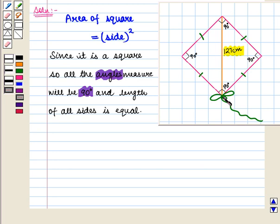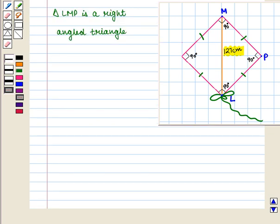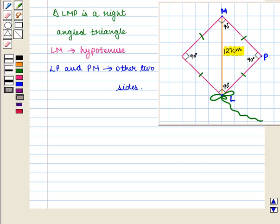Now, let us label this end be L, opposite end be M, and this end of the kite be P. Then, triangle LMP is a right-angled triangle right-angled at P. So, side LM will be the hypotenuse of triangle LMP and LP and PM will be the other two sides of the triangle. Since it is a square, length of side LP will be equal to length of side PM.